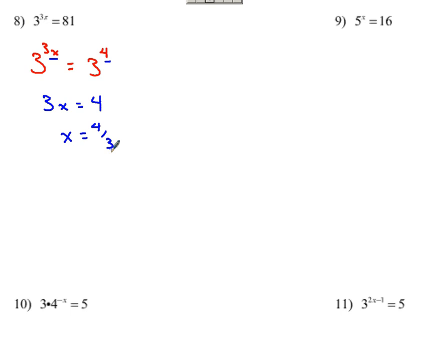Now, on number 9, we've got 5 to the x equals 16. If we try to incorporate the techniques that we used over here on 8, the common base, prime base approach, obviously 5, that's prime base, can't do much with that, you've got 5 to the x.